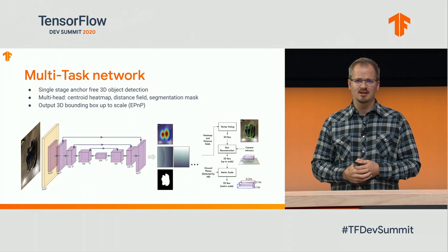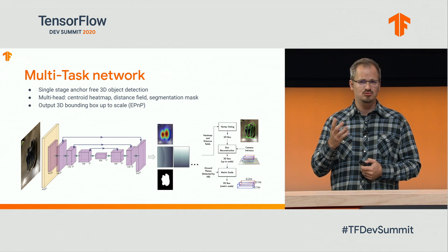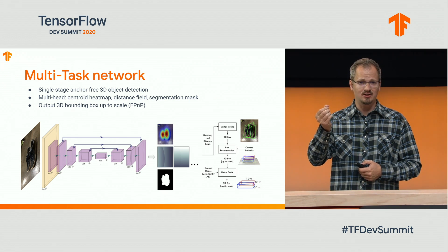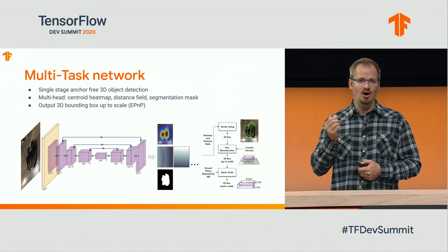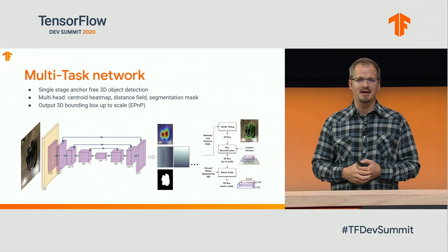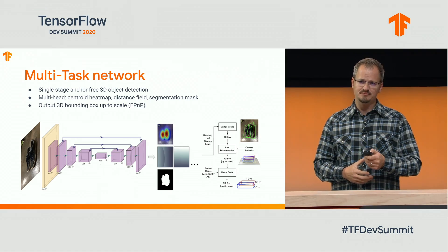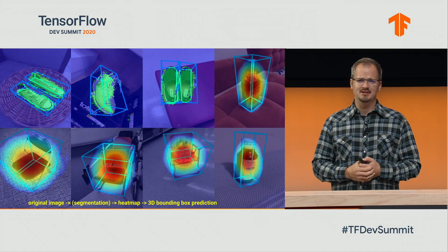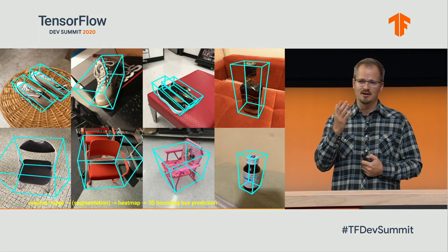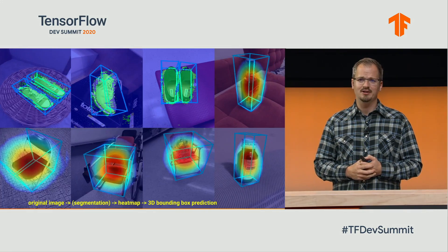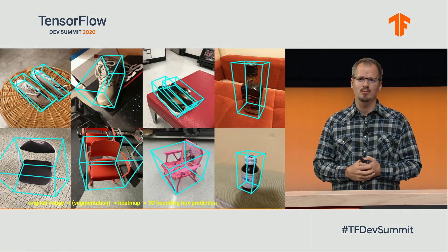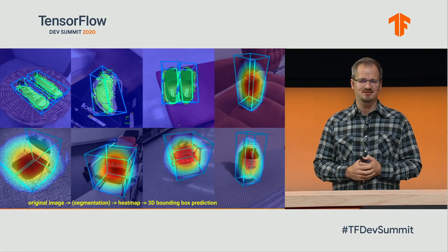The network architecture is a multitask network where, for every input image, we're predicting three things: number one, the centroid of the object; then the offset from that centroid to locate the eight corners that make up a bounding box; and optionally, a segmentation mask that you can use to model occlusions. All these tasks are highlighted — you see the centroid in the jet color map, the bounding boxes, and optionally the segmentation mask.